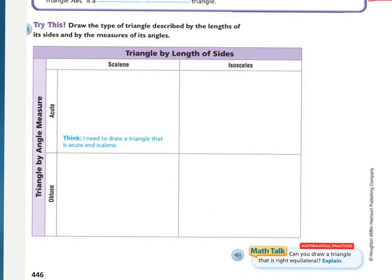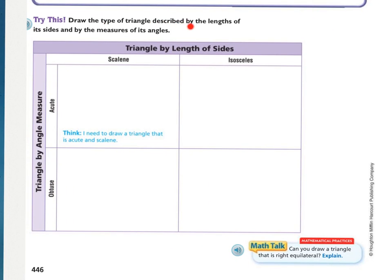The Try This says to draw the type of triangle described by both the lengths of its sides and the measure of its angles. They want you to draw two scalene triangles and two isosceles triangles. One scalene triangle must have acute angles — all three angles less than 90 degrees. The other must be a scalene triangle with an obtuse angle. Then you have an isosceles acute triangle and an isosceles obtuse triangle. Press pause and draw your four different triangles.